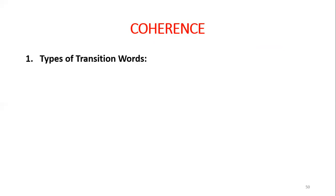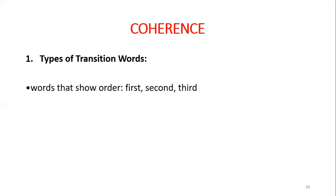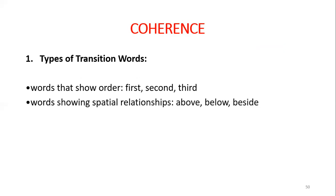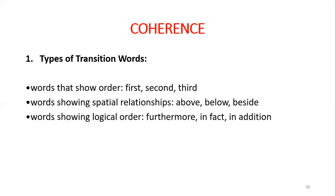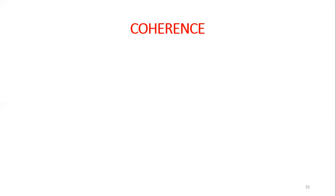This is how to make your writing understandable. You make your paragraph coherent by connecting ideas to one another. Two ways: one is to use transition words to create a bridge from one sentence to the next; two, be consistent in using word tense and point of view. Type one: transition words that show order like first, second, third, next, then, after, later on. Words showing spatial relationship like above, below, beside. Words showing logical order like furthermore, in addition, additionally, moreover, however.